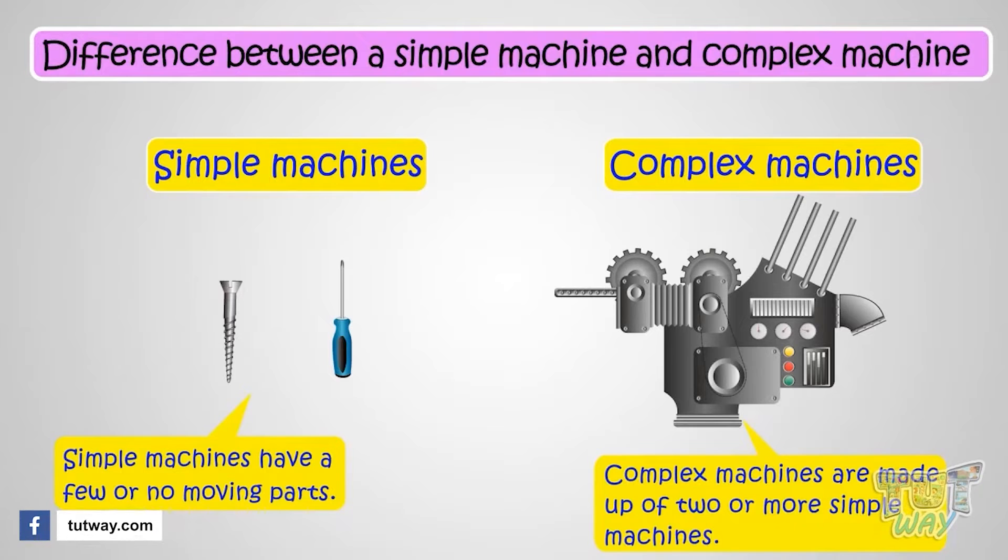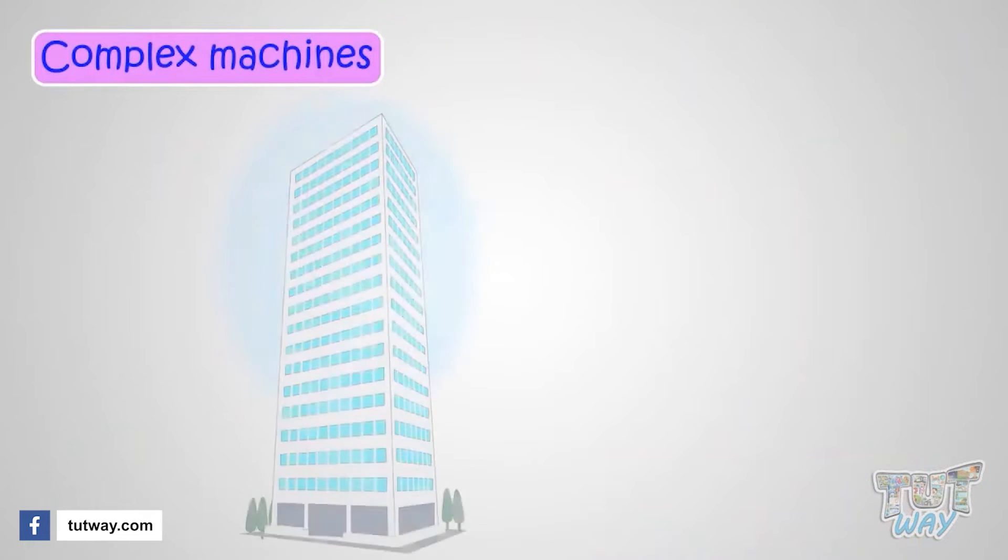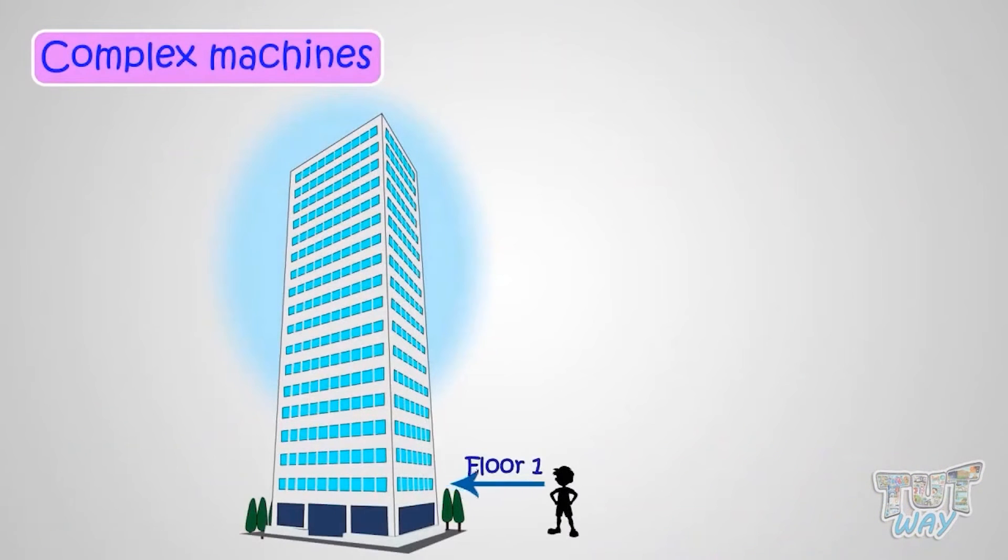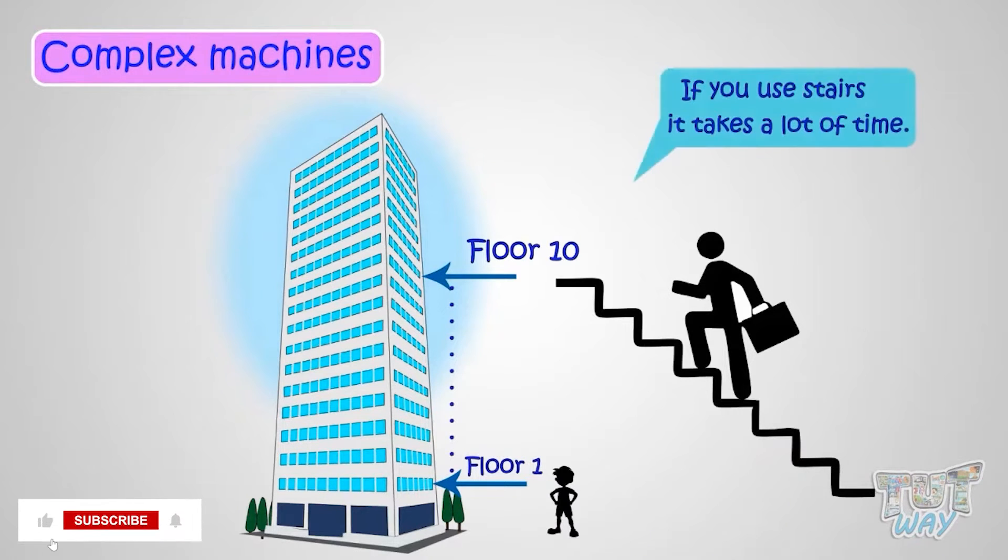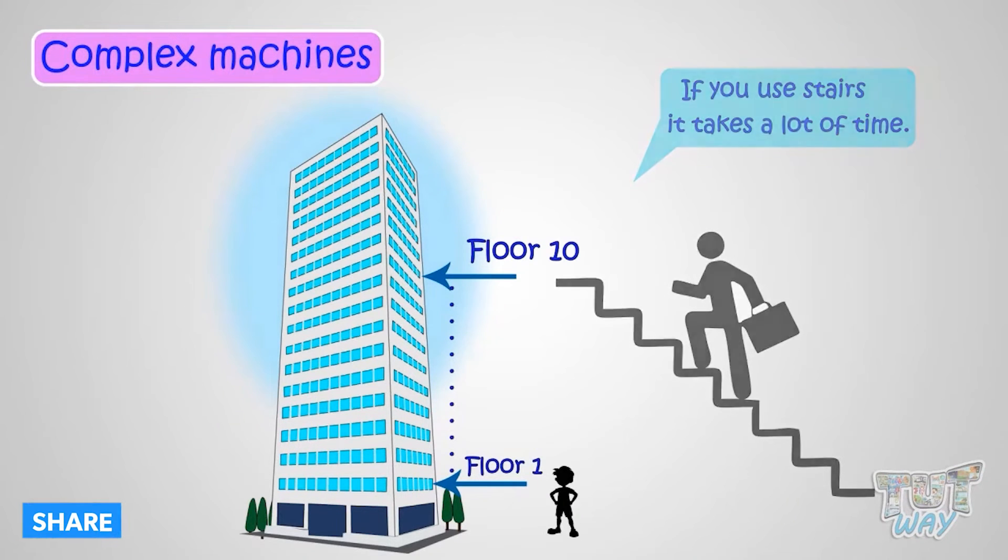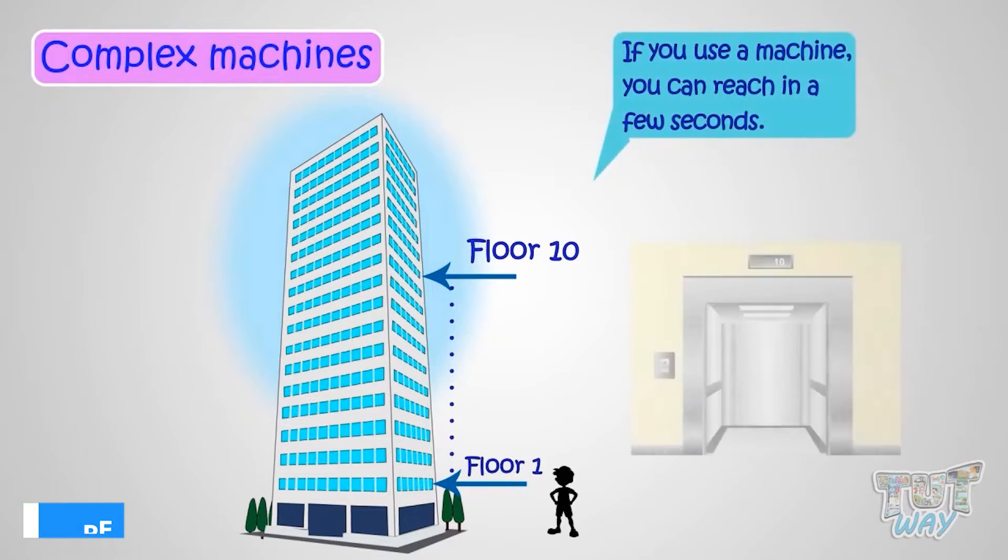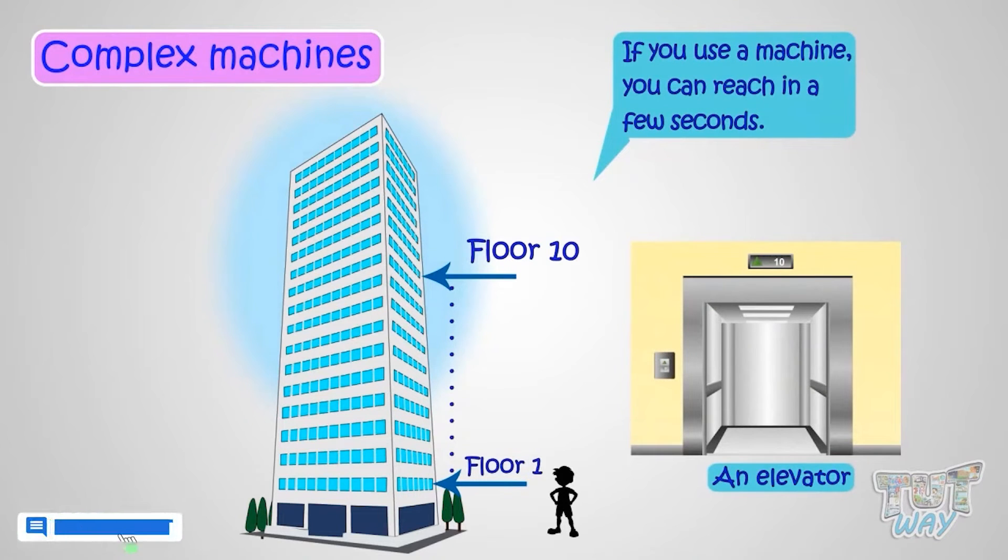Let's have some examples. If you are on floor 1 and you have to go to floor 10, if you use the stairs—that is, you do not use any machine—it will take a lot of time. On the other hand, if you use a machine, for example an elevator, you can reach in a few seconds.